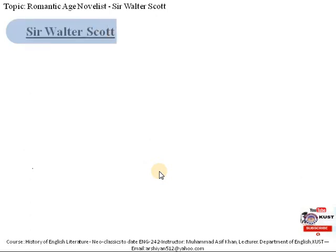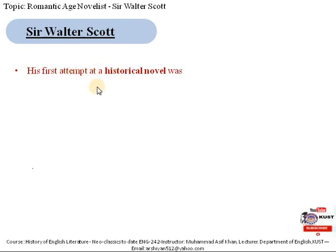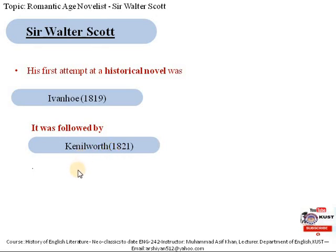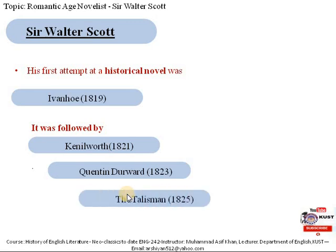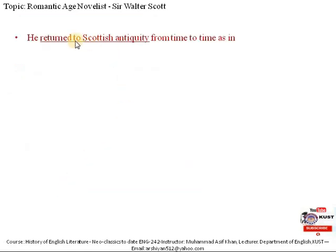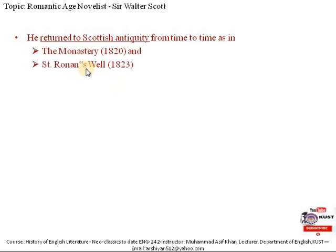After these initial novels, he turned towards historical novels. His first historical novel was Ivanhoe, published in 1819. This was followed by Kenilworth, then Quentin Durward, and then The Talisman. These historical novels are the mainstream novels of his career. After them, he turned back towards Scottish antiquity, as seen in The Monastery, published in 1820, and Saint Ronan's Well, published in 1823.